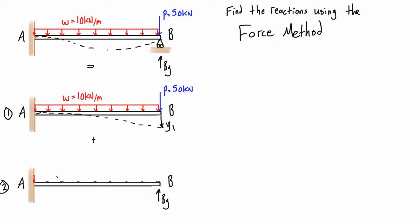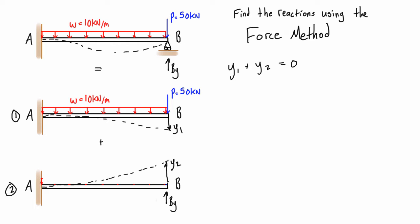In Case 2, we apply the point load BY — whose magnitude is unknown — at the end of the cantilever, producing an upward deflection we call y2. We know that the upward deflection caused by the redundant reaction must be equal and opposite to the downward deflection from the applied loads, because at point B the real deflection is zero. So the compatibility equation is: y1 + y2 = 0.